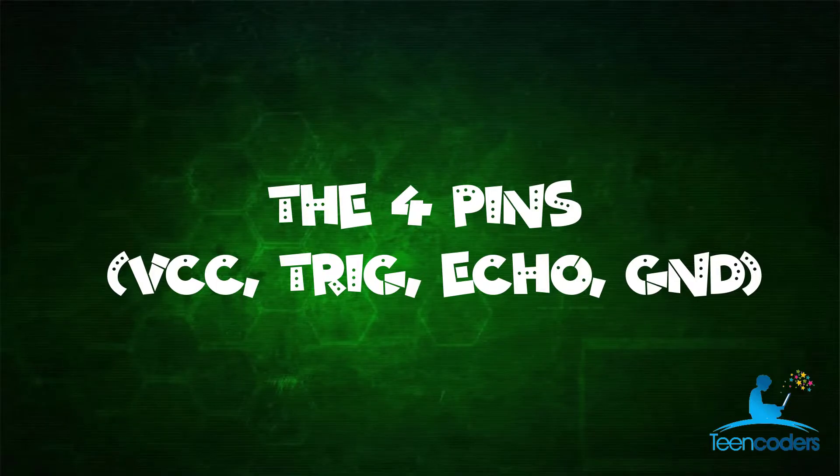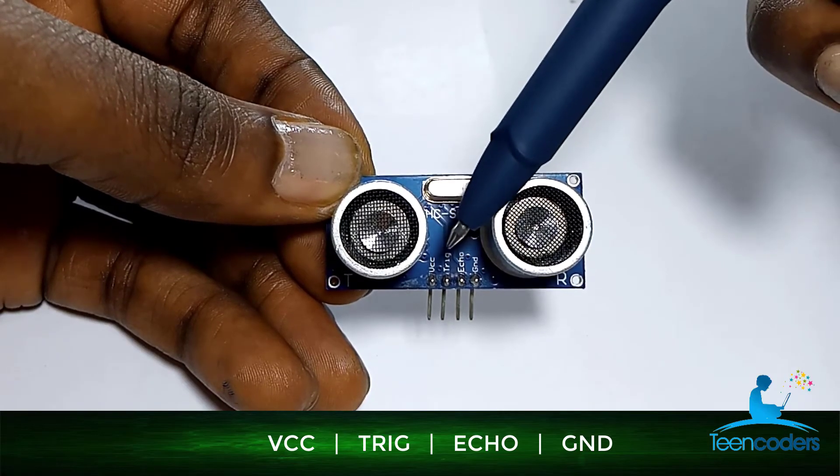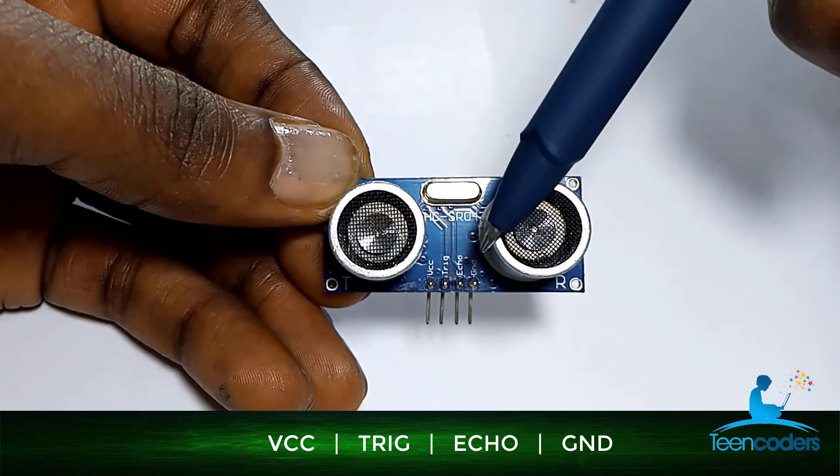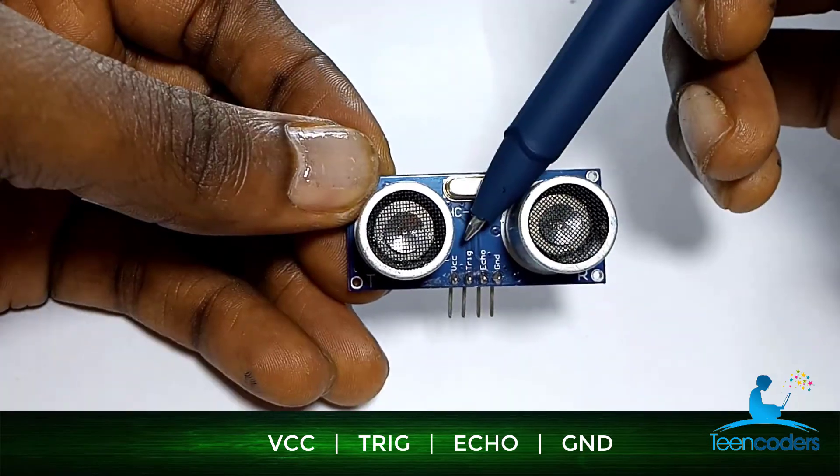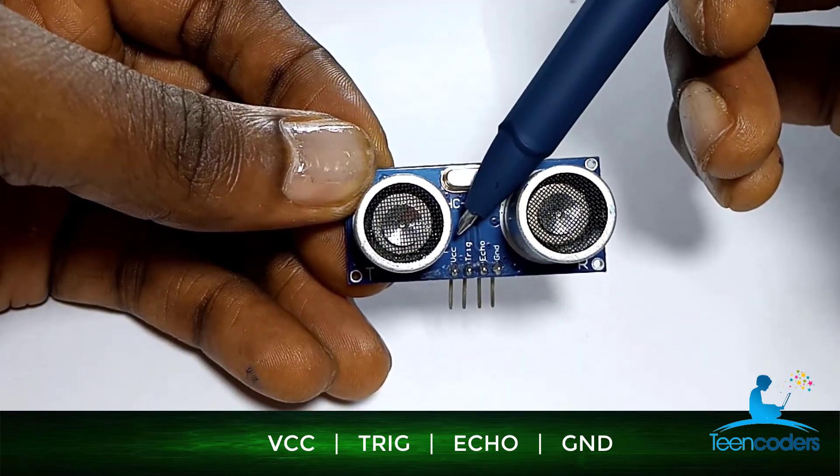Secondly, we have four pins. We have the VCC, we have the trig, we have the echo, and then we have the ground. The VCC powers the ultrasonic sensor, typically with 5 volts.